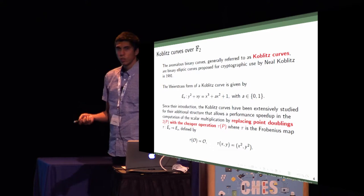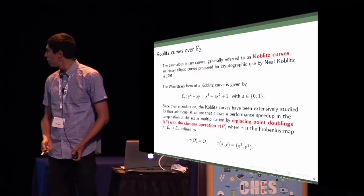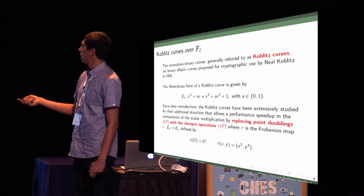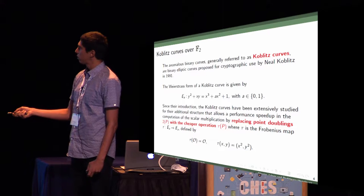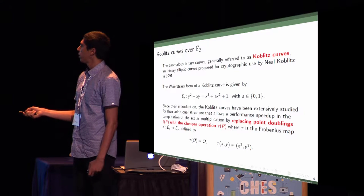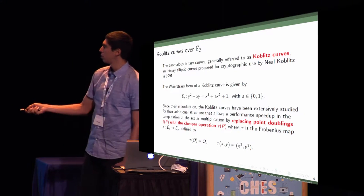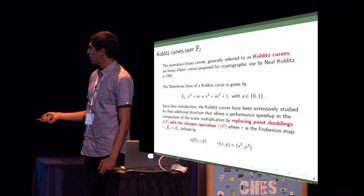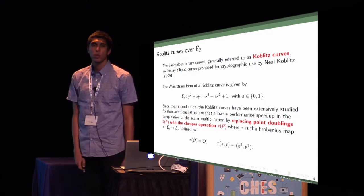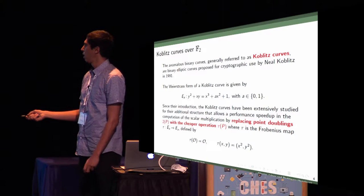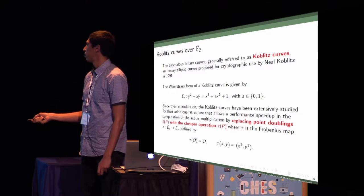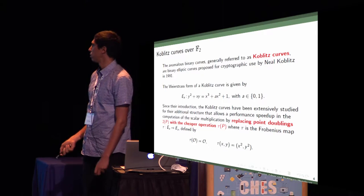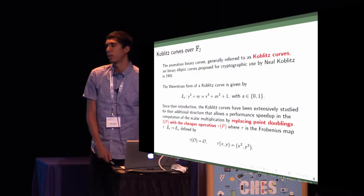Since the introduction, they have been extensively studied because they have a structure which allows substituting point doublings, 2P, by the cheaper operation tau P, where tau is the Frobenius map. This tau is very fast because we just have to perform two squarings in affine coordinates, squaring x and y. It's very fast compared to point doubling operations which require multiplications and squarings.